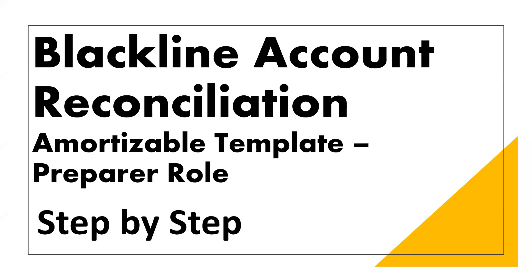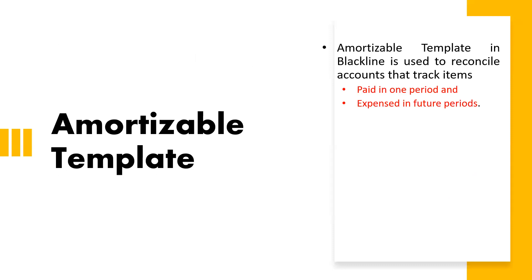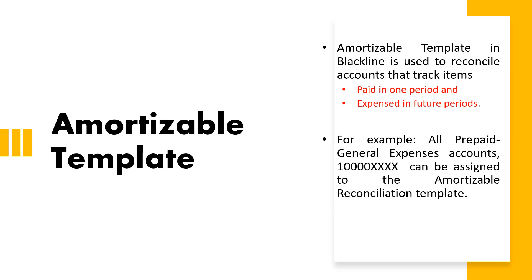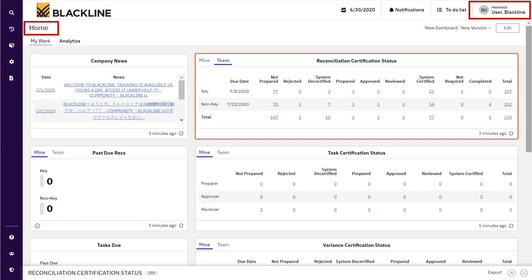Today we are going to discuss in BlackLine how a reconciliation is performed using an amortizable template. BlackLine offers multiple default templates for reconciliation purposes, and the amortizable template is one of them. As a system admin, while configuring the account information in BlackLine, these templates are assigned to relevant accounts — specifically accounts where payments have been made in one period and expenses will be incurred in future periods. All prepaid accounts from the chart of accounts are generally assigned to the amortizable template.